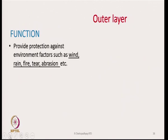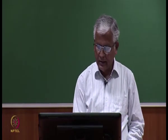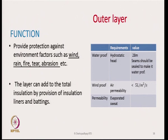The outer layer's function is to provide protection against environmental factors such as wind, rain, fire, tear, and abrasion. It also adds to the total insulation by providing insulation liners and battings. Key requirements include being highly waterproof — with a hydrostatic head of around 28 meters — and seams should be sealed to make the garment fully waterproof.